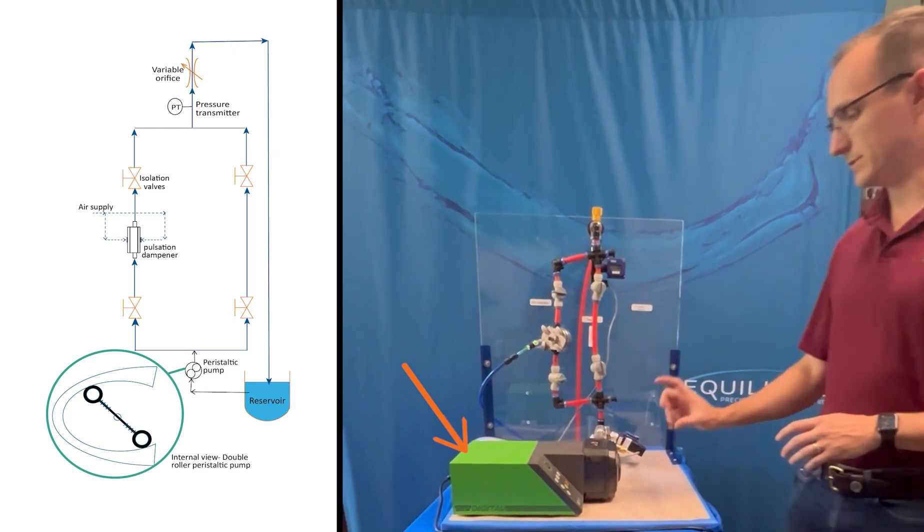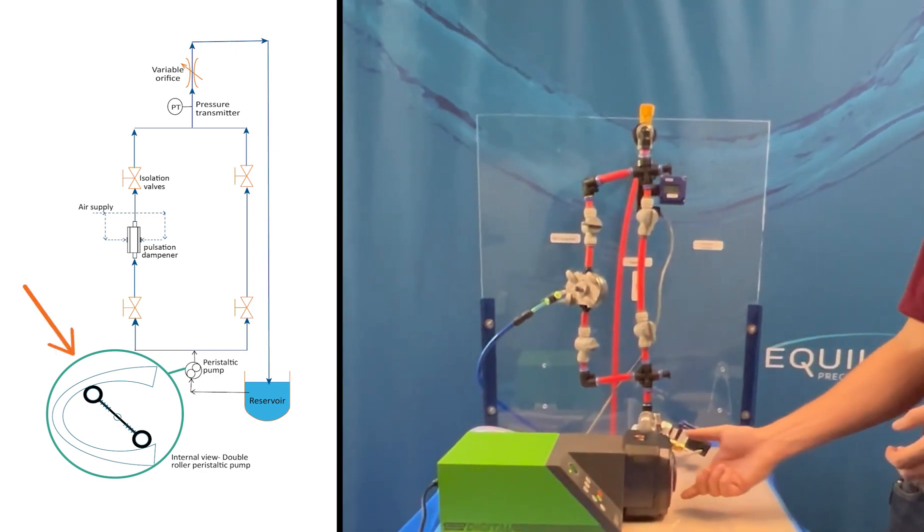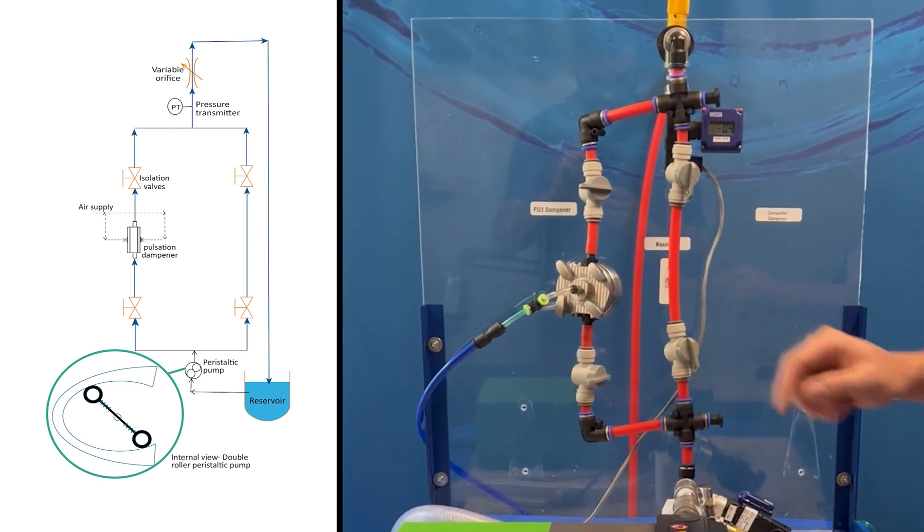This is a peristaltic pump which uses a roller to pinch a tubing to generate flow. This is a two-headed roller where our system here will generate flow and go to one of these two branches.